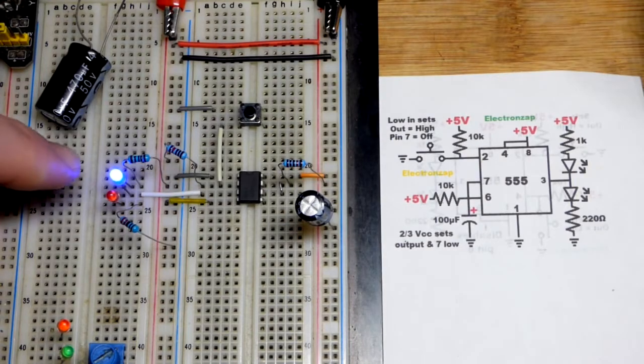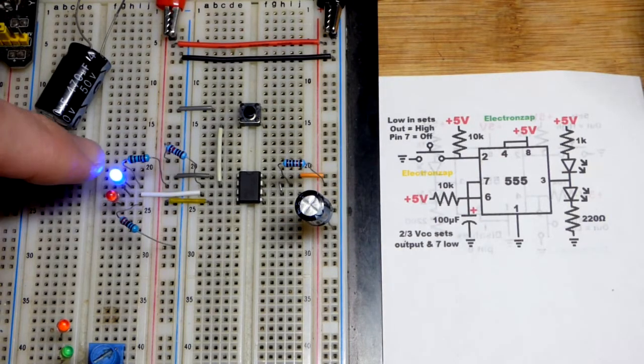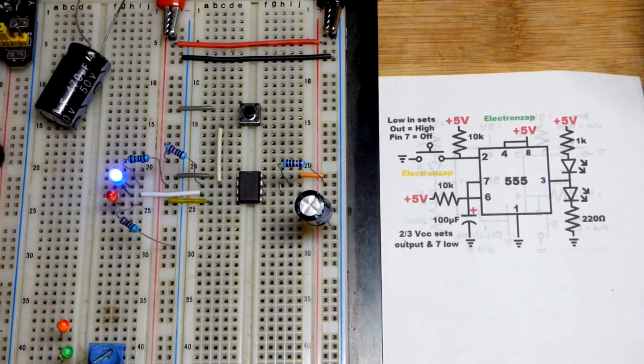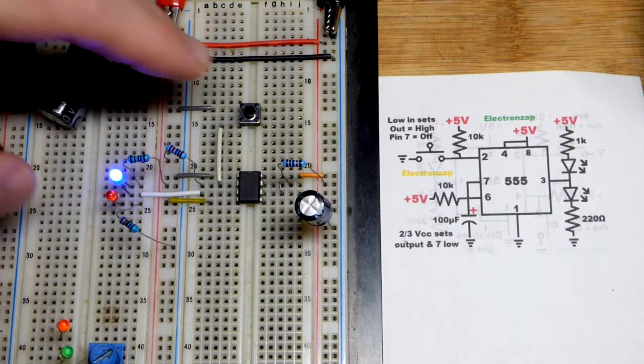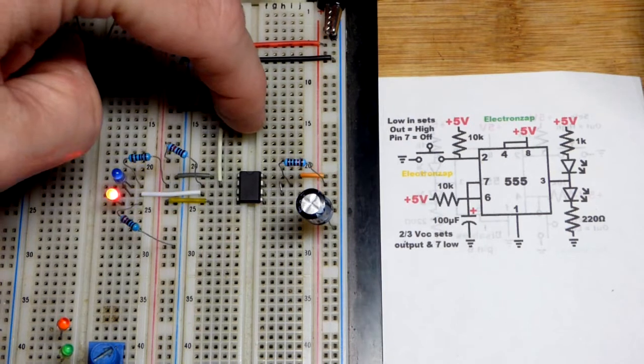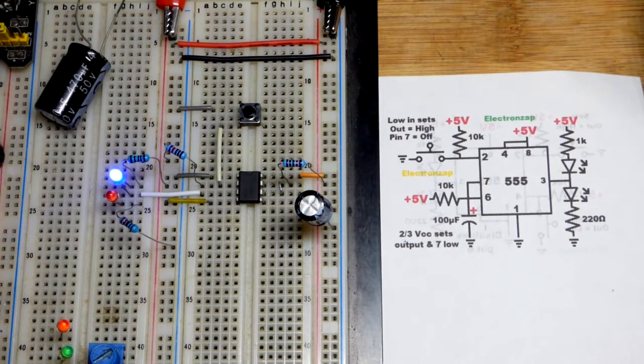A monostable 555 timer has one stable state where the output is low. We can force the output to go high, but it's going to go back to low and stay low until we force it to go high again. We give a low input to pin 2, the trigger pin, to set the output high for a short period of time.